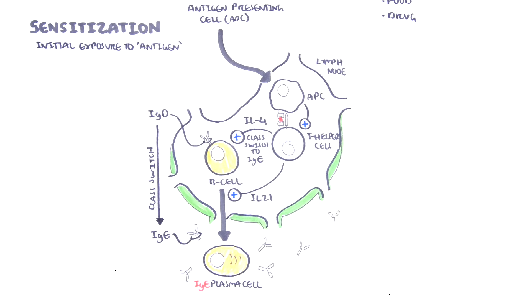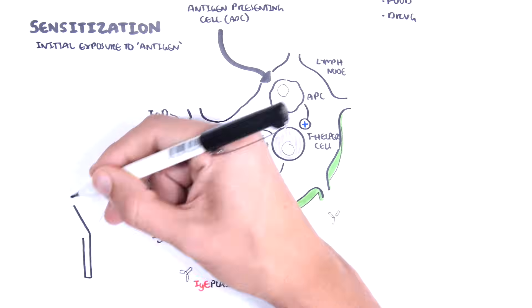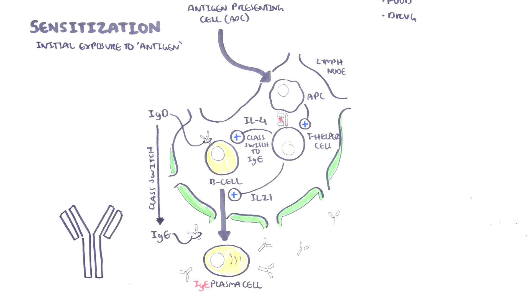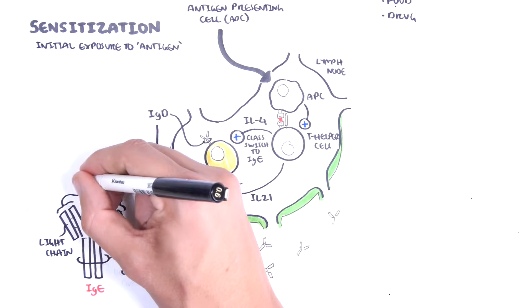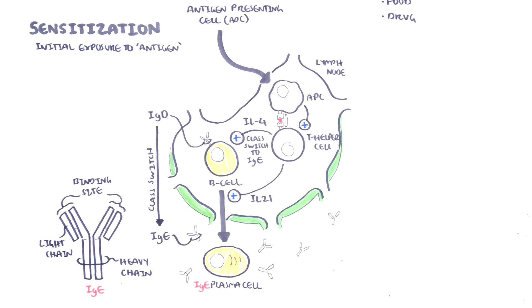IgE is one of five immunoglobulin classes, and it has a major role in type 1 hypersensitivity reaction. IgE is made up of heavy chains and light chains, and on the top is the binding site for that specific antigen.